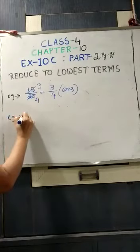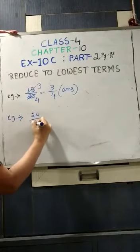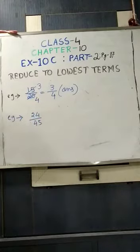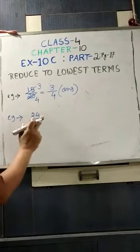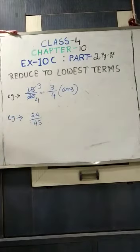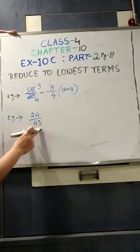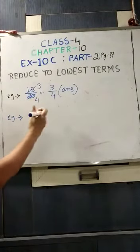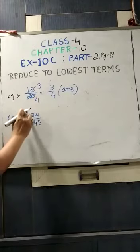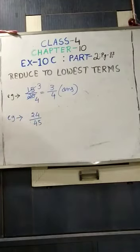Another example: 24 by 45. What is the common factor or common number that divides 24 as well as 45? You can see that the denominator is 45, so it is not divisible by any even number. We will have to go for an odd number. 24 is divisible by 2, but we cannot take 2 as 45 is not divisible by 2.